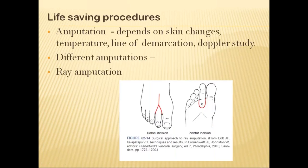For life-saving management, any gangrenous limb must have the gangrenous part removed. If a toe is gangrenous, remove the toe. Amputation level depends on skin changes, temperature, line of demarcation, and Doppler results. A ray amputation uses a tennis racket incision for the involved toe — plantarly and dorsally the incision is given, the toe is removed, and the metatarsal head is coned so that bone marrow is exposed, promoting healing.